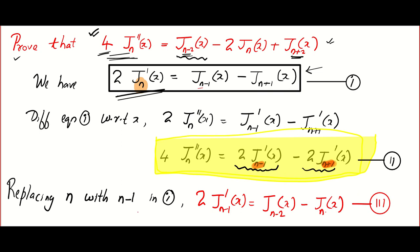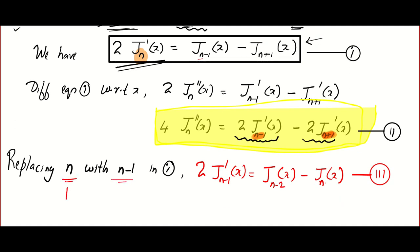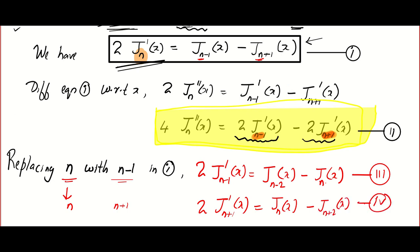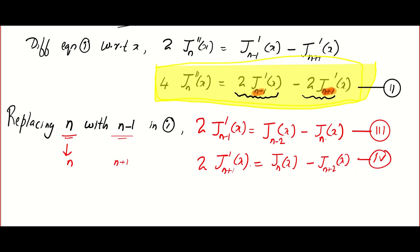Now for the second term, replacing n with n+1 in equation 1: 2Jn+1'(x) is equal to — if I replace n with n+1, n+1 minus 1 gives Jn(x), minus n+1 plus 1 gives Jn+2(x). That will be equation number 4.